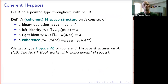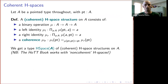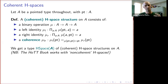Let me start by reminding you what an H-space is. If A is a pointed type — and we'll let it be a pointed type throughout — we'll denote the base point by PT. Then a coherent H-space structure on A consists of the following data: a binary operation mu from A cross A to A, then left and right homotopies exhibiting the base point as a left and right identity for the multiplication.